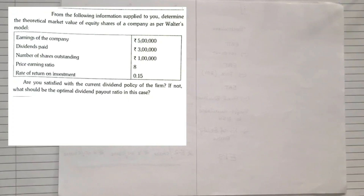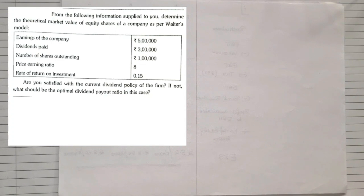Now let us solve the first question under Walter's method. The question asks us to determine the theoretical market value of equity shares as per Walter's model, given total earnings, total dividend paid, number of shares outstanding, price earning ratio, and rate of return on investment. To solve this sum you need four values: earning per share, dividend per share, rate of return, and cost of capital.